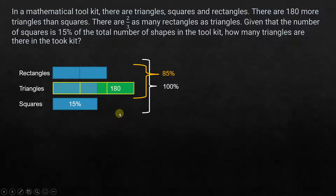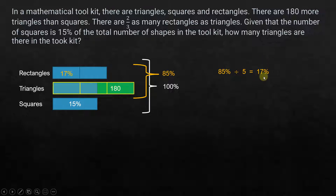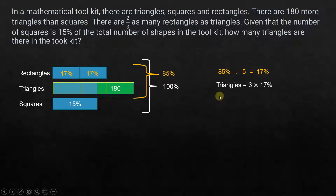This 85% is equally divided into five equal parts. So one part is 85% divided by 5, which gives 17%. Each of the five parts is 17%. Triangles occupy three of those parts, so triangles represent 3 times 17%, which equals 51%.